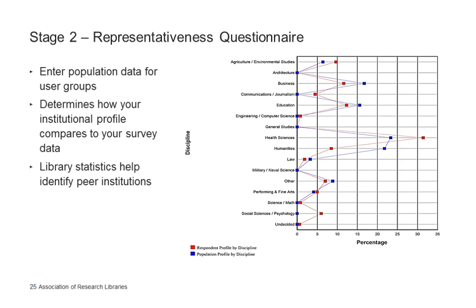The representativeness questionnaire also asks for statistics on the library's expenditures and staffing, based on questions from the annual ARL statistics survey. This information helps libraries identify peer institutions for benchmarking their results. The library statistics requested include total library expenditures, personnel for professional and support staff in full-time equivalents, total library materials expenditures, and total salary and wages for professional staff — using the fiscal year 2016–17 if you're running your survey in 2018.